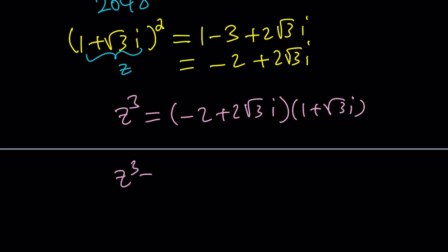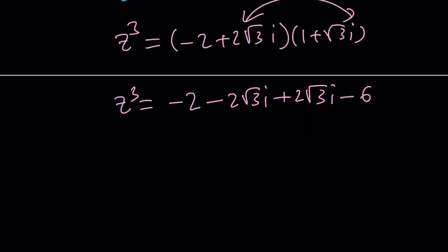Z cubed is going to be negative 2 minus 2 root 3i plus 2 root 3i. And then, if you multiply 2 root 3i by root 3i, you're going to get 2 times 3 times i squared, which is negative 6, right? Okay, great. So, from here, you're going to get z cubed equals negative 8. And, of course, these two things are going to cancel out.